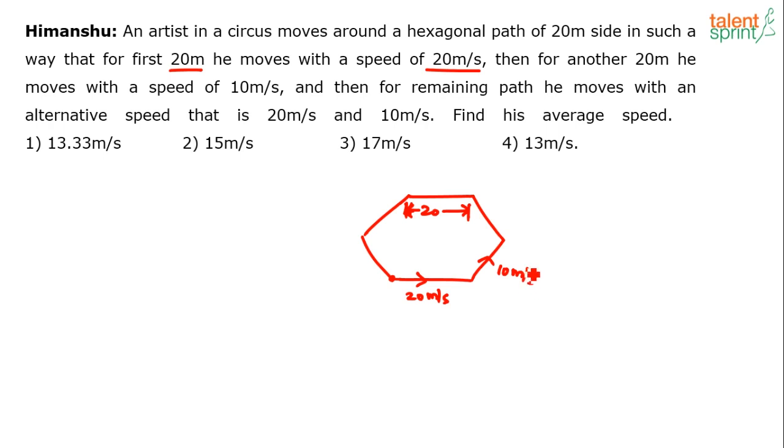Then he alternates between 20 meters and 10 meters for the remaining path. So which means he covers this part at 20 meters per second, then this one at 10 meters per second, then this one at 20 meters per second, and then this one at 10 meters per second.